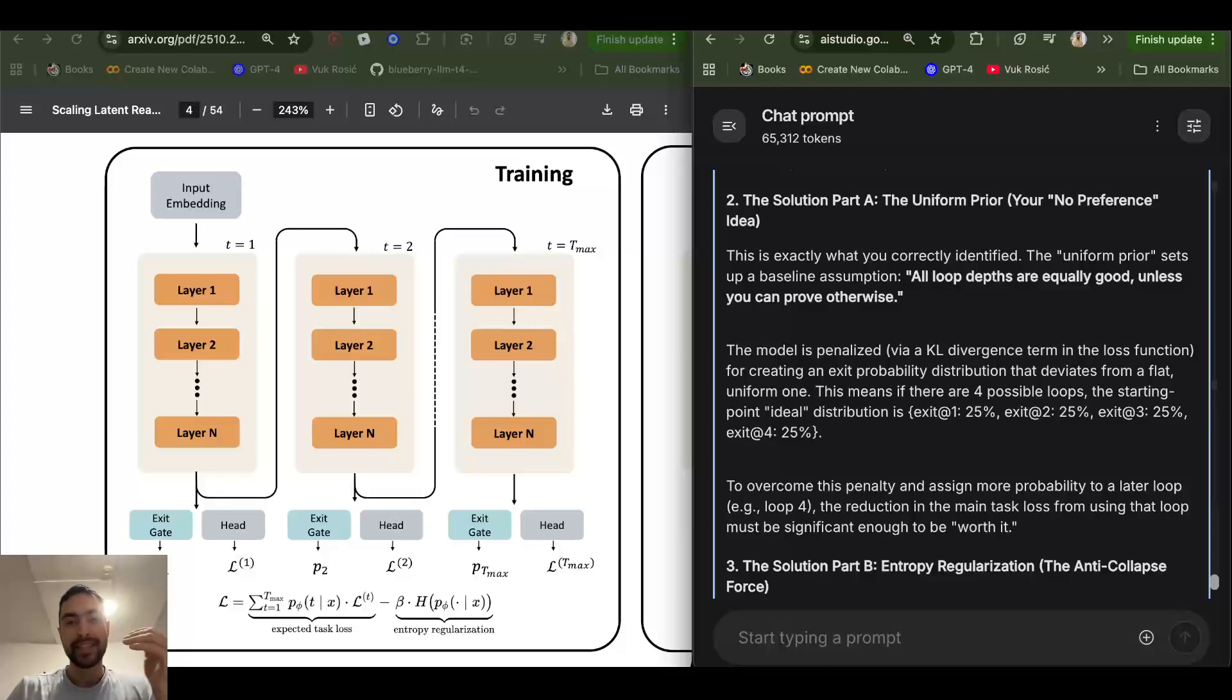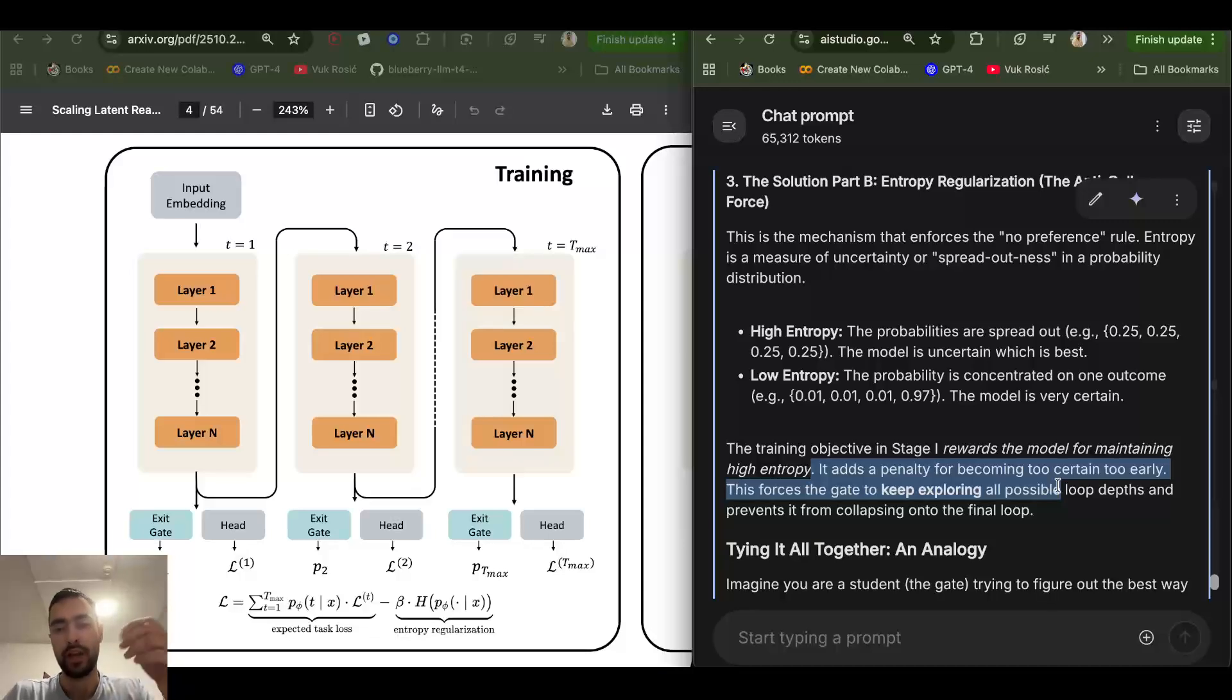So the loss that's reduced by that loop having higher probability must be even greater than the loss it gets from just making it more likely. So let me reiterate this more simply. In this first stage, there is a price to pay for preferring some amount of loops. So if the model wants to make some amount of loops more likely for this particular sequence of tokens, and keep in mind, every sequence of tokens will have its own separate decision on how many loops it wants to use. So if, for example, last loop, or let's say maximum amount of loops is starting to become more preferred, more likely to happen, it will be punished the more it diverges from the uniform distribution of all having equal probability.